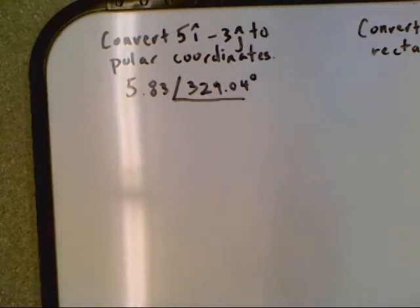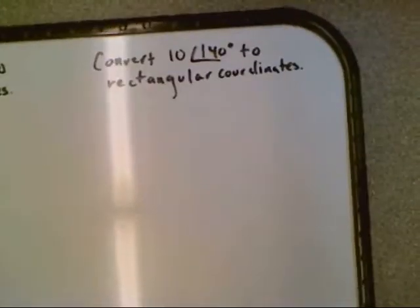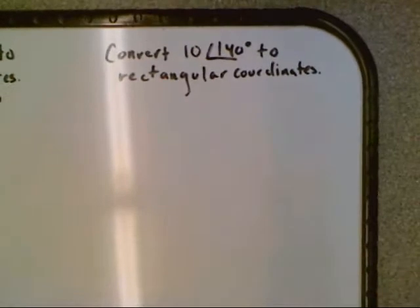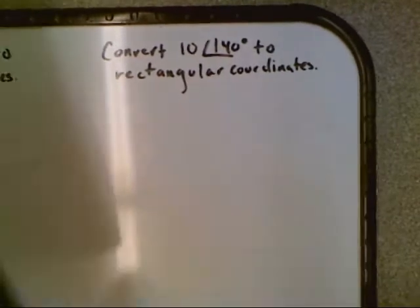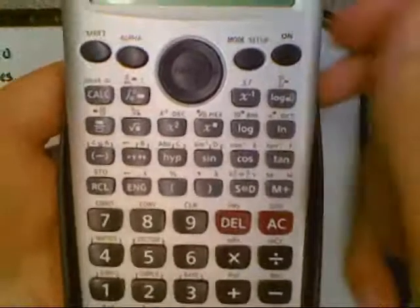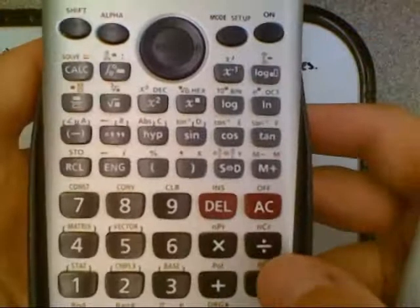So that was converting from rectangular to polar. Converting from polar to rectangular, very similar process. Since we're converting to rectangular, first we need to press shift and then the rectangular function.